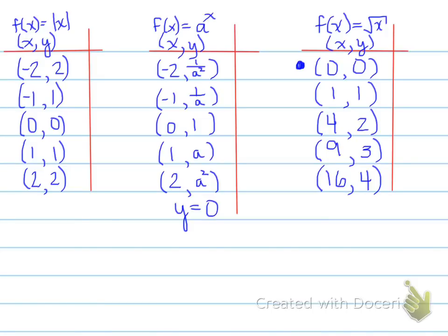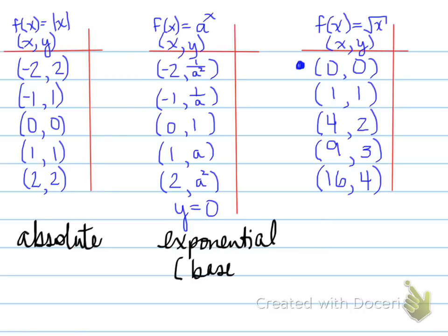But what's very important here, folks, is to note something. Note that you have a dot here at the top up here. This dot represents where there's a dot on the root function. And the other side will have an arrow. So again, this is the absolute function, the exponential function with a base of a, and finally, the root function is over here.